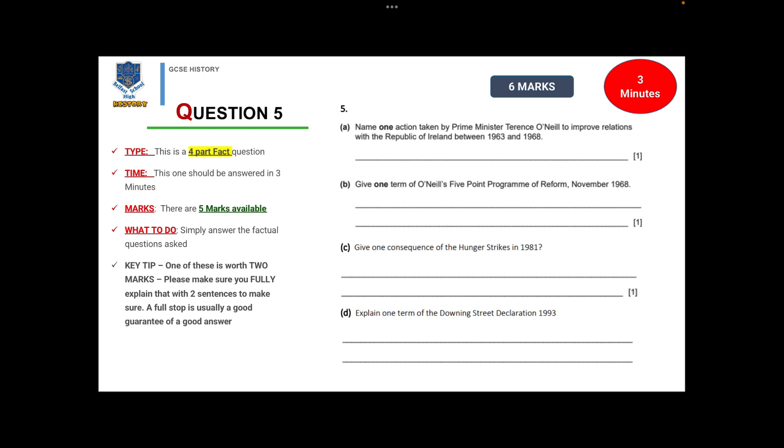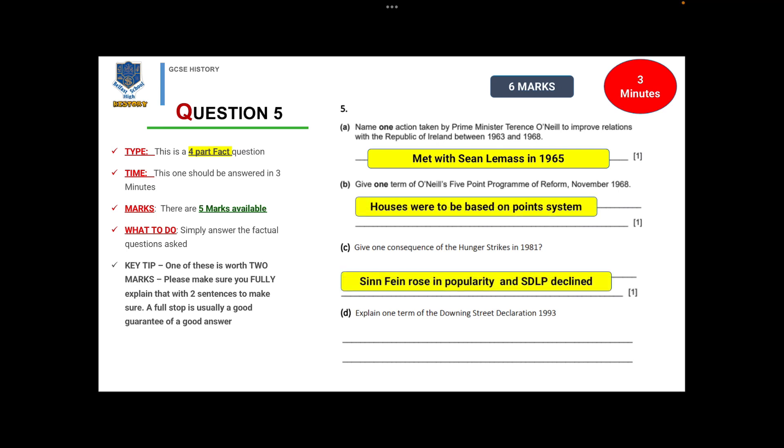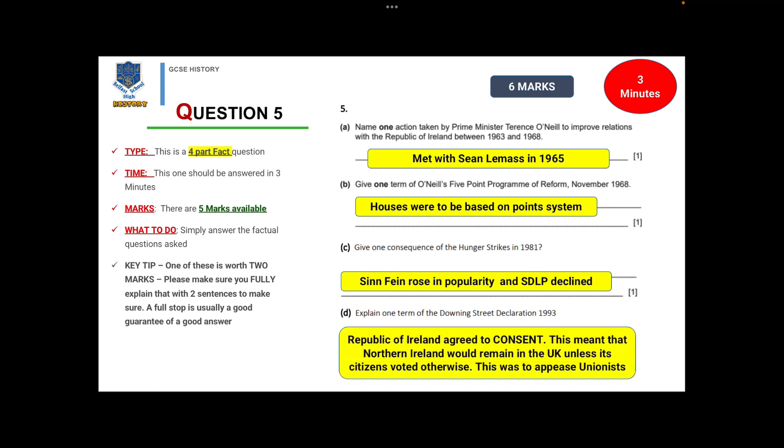Question 5 takes a straight turn. It's four-part facts, with simple unmarked facts apart from the last one. The last one asks you to explain, so make sure you explain fully for the two marks. For example, explain one term of the Downing Street Declaration. The Republic of Ireland agreed to consent—this meant that Northern Ireland would remain in the United Kingdom unless its citizens voted otherwise. This was to appease unionists. Three minutes, you're trying to zip through it—it's just about facts.